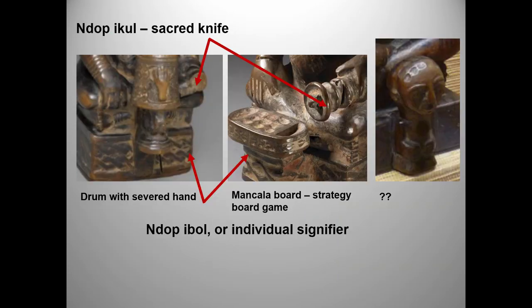One other important shared feature of Ndope statues — one that could easily show up on a multiple choice question — is that in addition to a distinguishing geometric pattern, each king chose an ebol, or individual signifier. The strategy board game depicted on our attribution work is thought to symbolize the king's cleverness and skill in military strategy. The severed hand on a drum in our required work might mean that he's tough on his enemies, or that he has strength in his head as well as his hand. What's important to remember is that Ndope statues on one hand represent all Kuba kings, but on the other hand each statue also represents an individual Kuba king distinguished not by his facial features, but by his personal symbols.